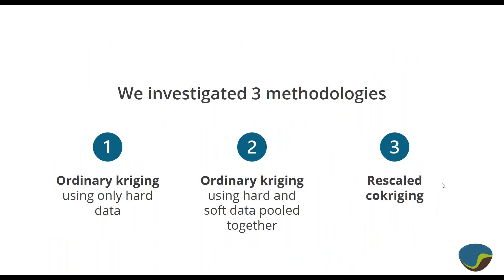Three different possible estimation methods will be presented. First: ordinary kriging using only the hard data, throwing away all the biased imprecise data that would potentially mess it up. Second: using all of the data pooled together — pretending that the biased data is unbiased and going ahead with the estimation anyway. It won't be too much of a spoiler to say this doesn't work very well. And third: rescaled co-kriging, with a couple of extra tweaks.